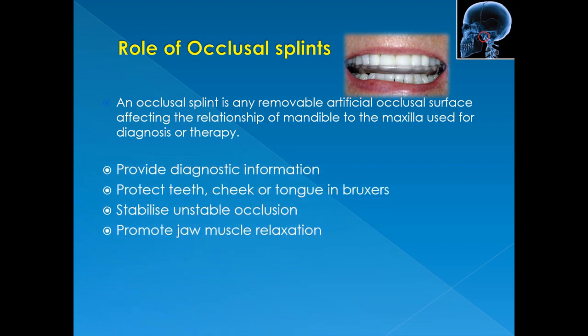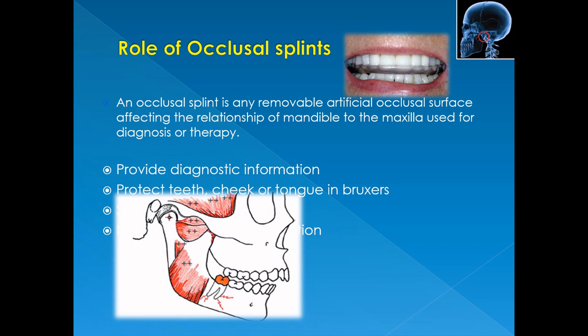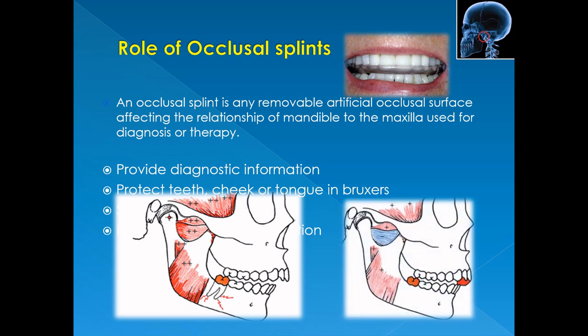The main purposes of an occlusal splint are: it provides diagnostic information, protects the teeth, cheek or tongue in bruxers, stabilizes unstable occlusion, and promotes jaw muscle relaxation. A deflective occlusal interference such as a high crown or deflected tooth incline can activate muscle hyperactivity and pain in the masticatory muscle. When we give an anterior splint, it separates the interfering molar from contact, permitting the condyle-disc assembly to seat up into centric relation. This eliminates the trigger for muscle hyperactivity, allows the inferior lateral pterygoid muscle to release, and peaceful comfortable muscle activity resumes quickly.